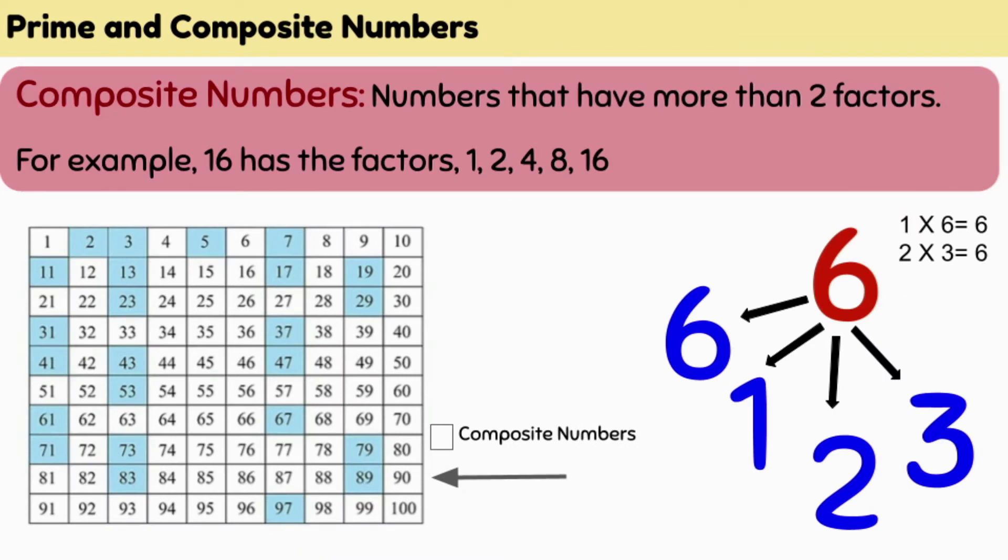For example, if we look at the number six, it has four factors, which are one, six, two, and three. Six can be divided by any of these numbers to give a whole number. And we can also multiply one and six or two and three to give us the answer six. Therefore, six is a composite number and not a prime number.